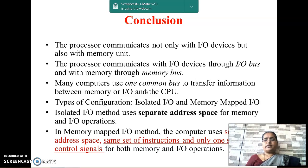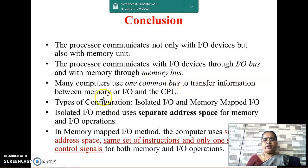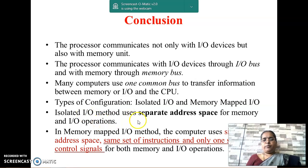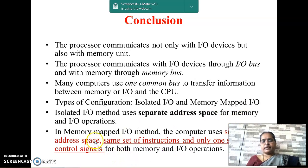To conclude, the processor communicates not only with IO devices but also with the memory unit. It communicates with IO devices through the IO bus and with memory through the memory bus. Many computers use one common bus to transfer information between memory or IO and the CPU. Depending upon the address space used, there are two types of configuration: isolated IO and memory mapped IO. In isolated IO, the CPU uses separate address space for memory and IO operations. In memory mapped IO, the computer uses a single address space, the same set of instructions, and only one set of control signals for both memory and IO operations.